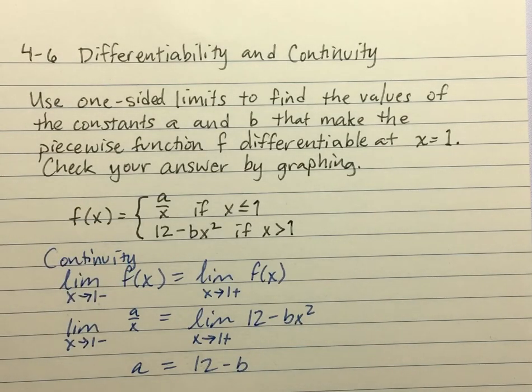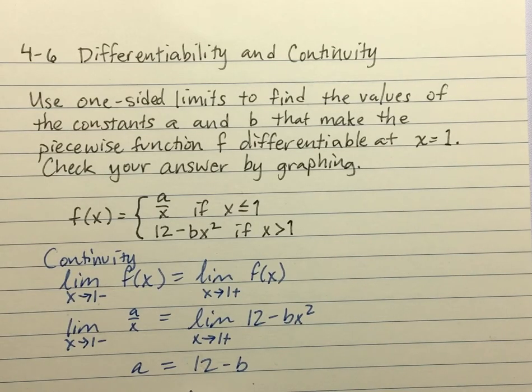So now I have one equation. Well, I have one equation but two unknowns. If I picked any pair of values, a and b, that made this equation true, I would have continuity. But I wouldn't have differentiability.